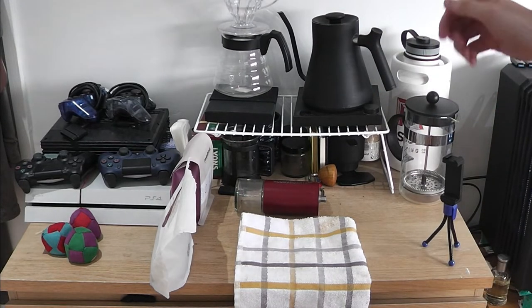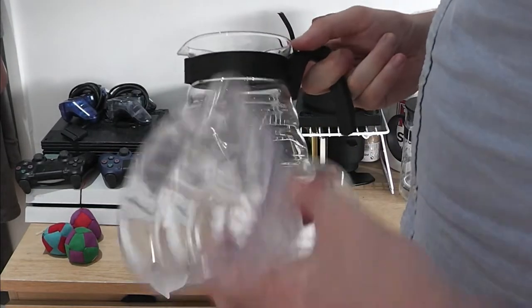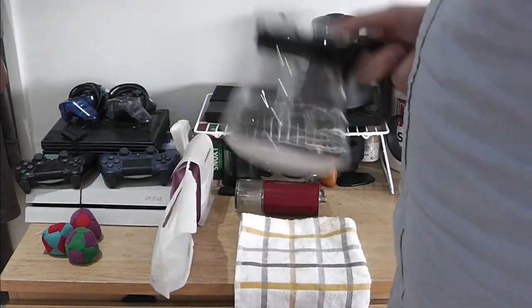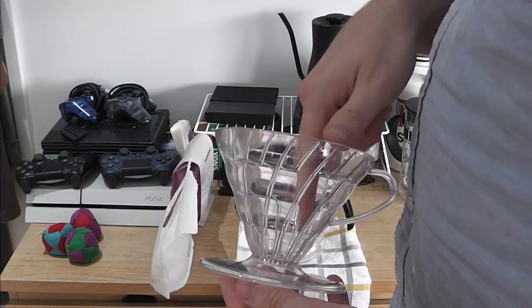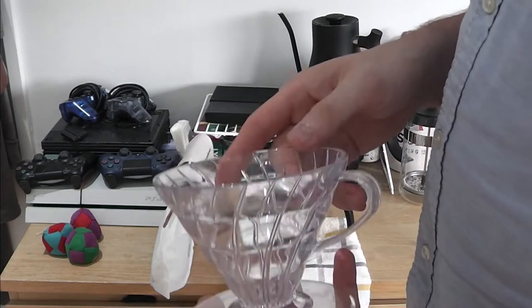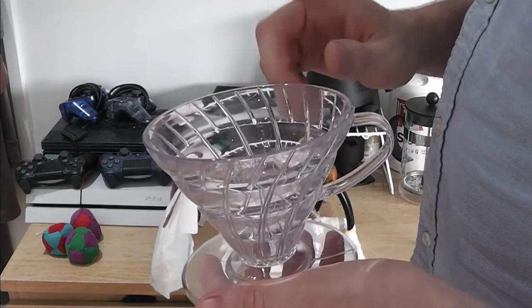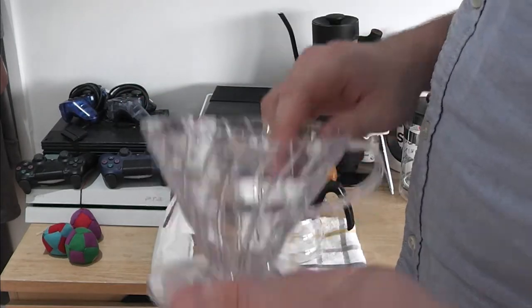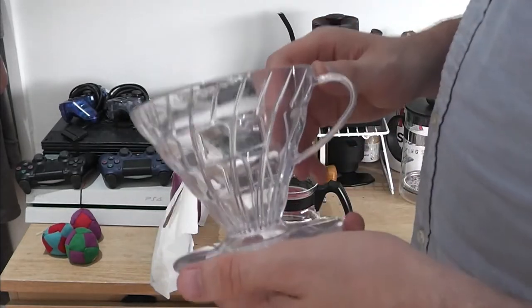Continuing on we have a number two V60 plastic filter and our glass carafe. I do have a metal V60 filter that I got from Buffalo. Right now I've been enjoying using paper filters more than I have been using the metal filter. Plastic filter as well, I feel that it holds the heat of the brew better than the metal one does, even though the metal filter heats up quicker. I feel it loses temperatures a little bit faster with the Harrier number two.